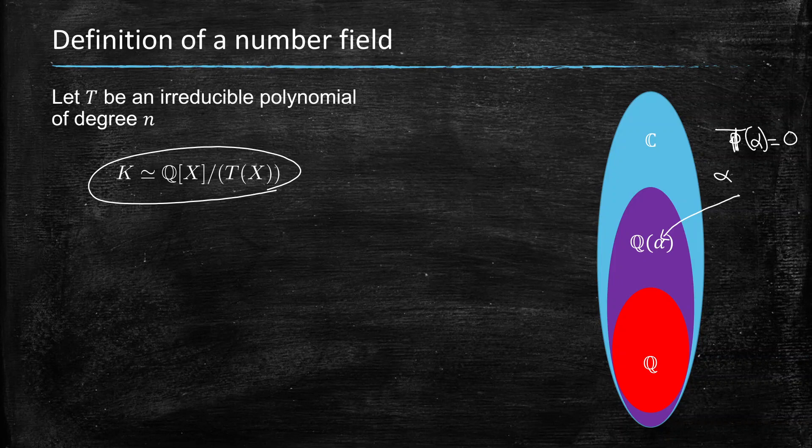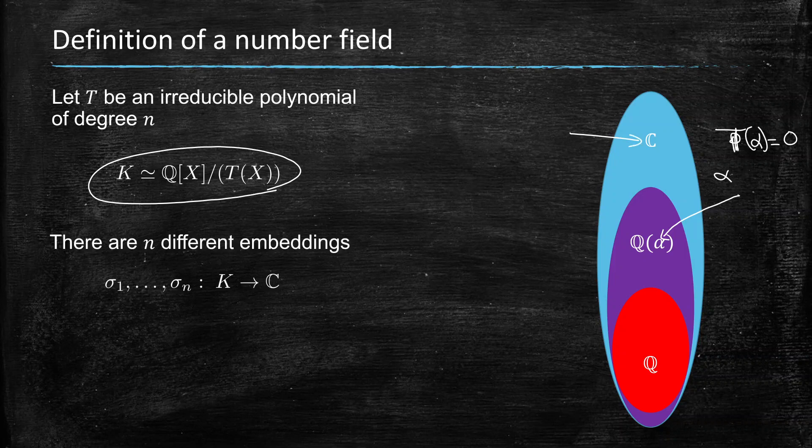Those fields can be, so they're all contained in C as I show in the drawing, and they can be embedded in C in n different ways where n is the degree of the polynomial.